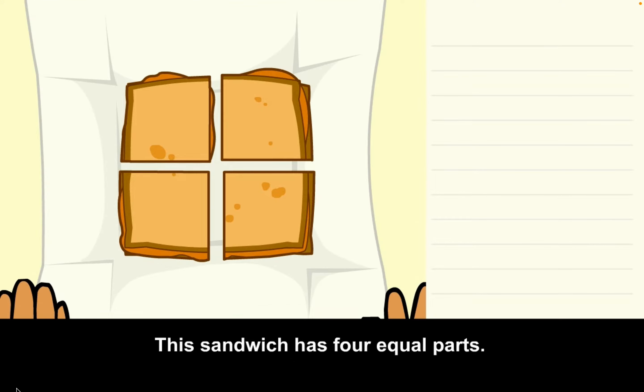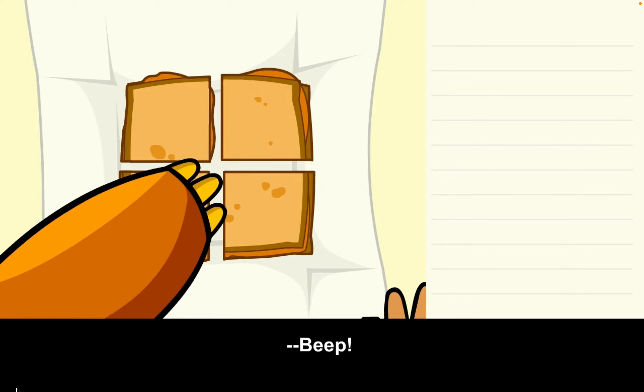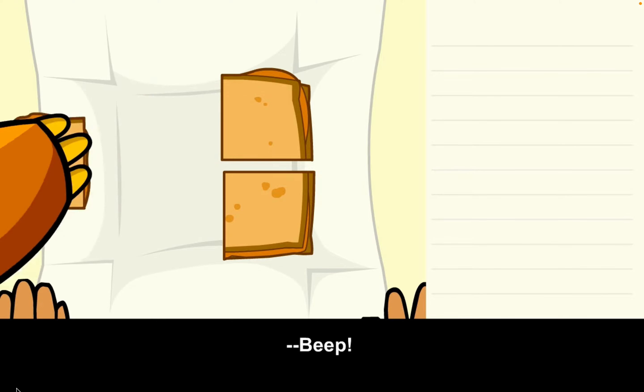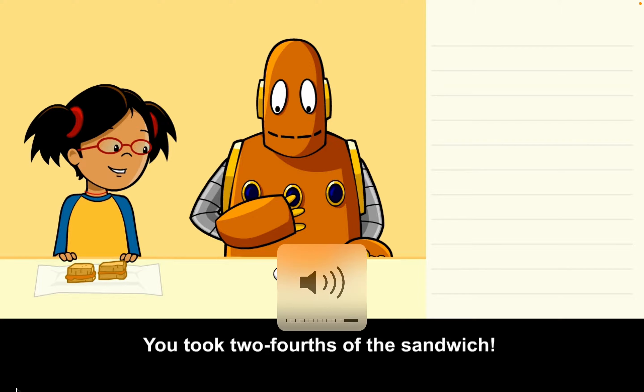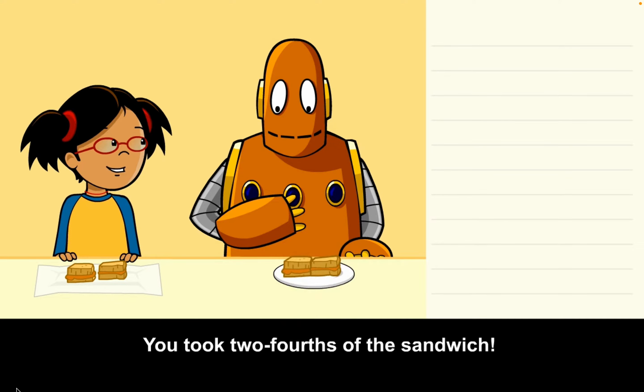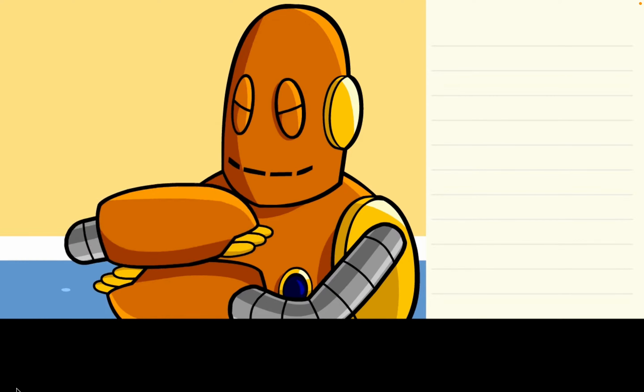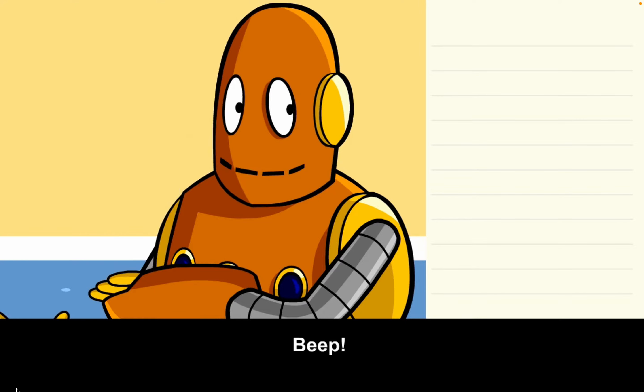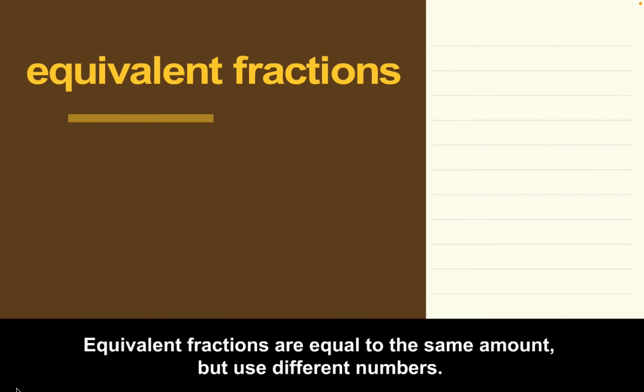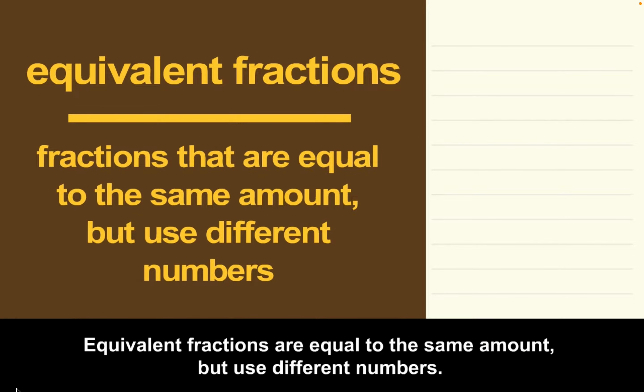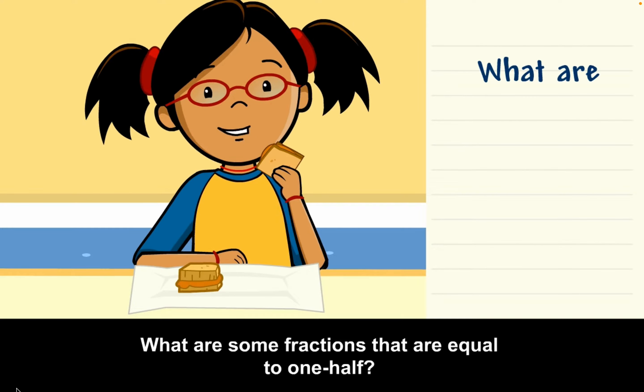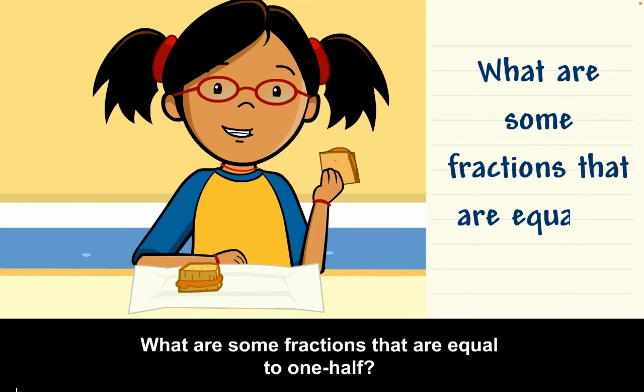This sandwich has four equal parts. You took two-fourths of the sandwich. That's the same as one-half. Equivalent fractions are equal to the same amount, but use different numbers.